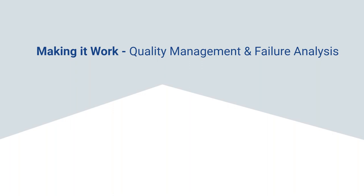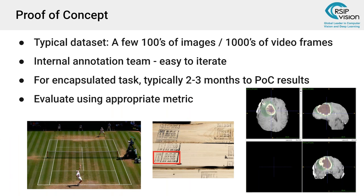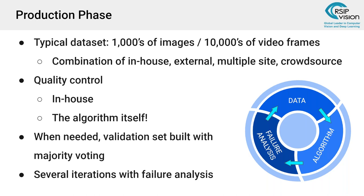For the proof of concept, you use just a few hundred images — maybe some videos if that's your test. We do annotations with an internal annotation team, which makes it easy to keep in a tight loop, fixing or adjusting annotations as needed. If the task is straightforward and encapsulated, it will typically take two to three months to get initial results. You want to evaluate on an appropriate metric: for classification, try F1 or accuracy; for segmentation, probably Dice.